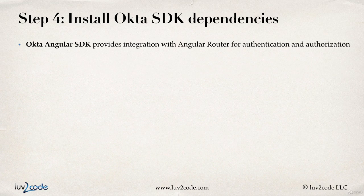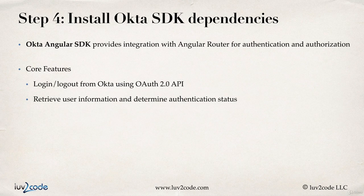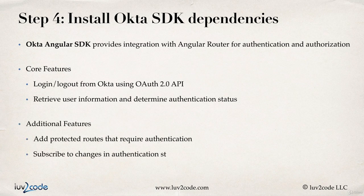There's also the Okta Angular SDK, which provides integration with the Angular router for authentication and authorization. Core features include login and logout from Okta using the OAuth 2.0 API, the ability to retrieve user information and determine authentication status — including displaying the user's name in the application — as well as adding protected routes that require authentication and subscribing to changes in authentication state.